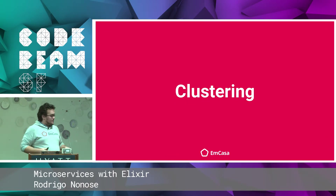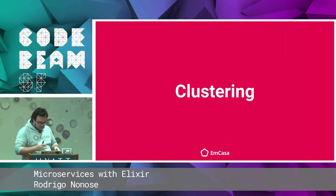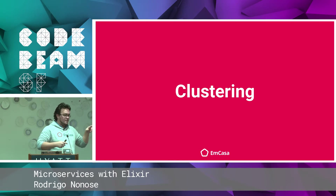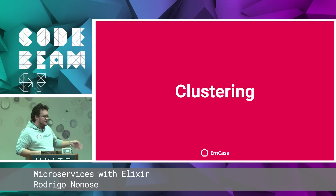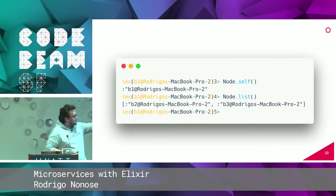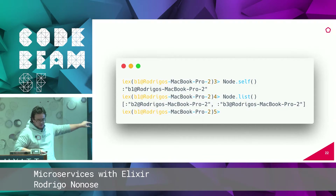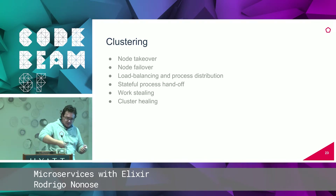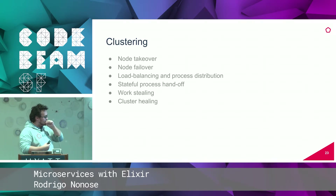Clustering in Elixir — as opposed to Node.js clustering, which is not exactly clustering — means that every node you spin up can be connected to one another with a simple command. When you connect to one node in the cluster, you connect to the whole cluster. It can be different machines, virtual or physical. You just get the name of the node and connect. Erlang's clustering allows a lot of good functionalities.